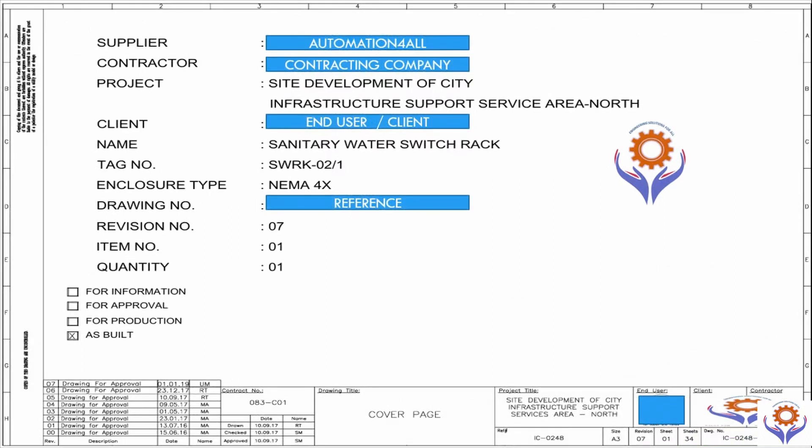If you see this drawing, this is the cover page of any electrical drawings, but the cover page will differ based on the requirements. Here you can find supplier details, contractors, project name, client details, name, tag names, and enclosure type.